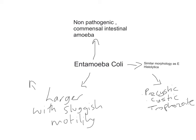The size of Entamoeba coli is generally around 20 to 50 micrometers.